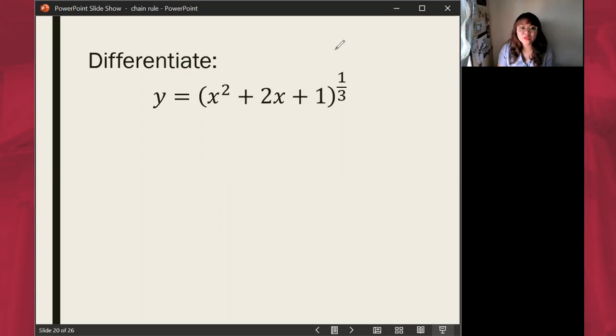First we have to identify our formula, and the formula is y' equals n times u' times u raised to n minus 1. Then let's identify the parts of the formula.